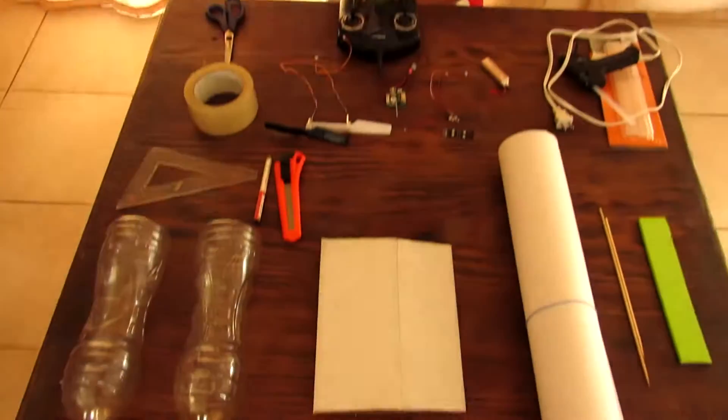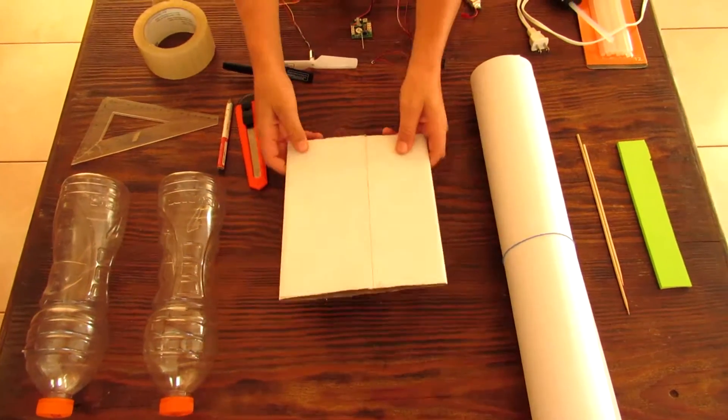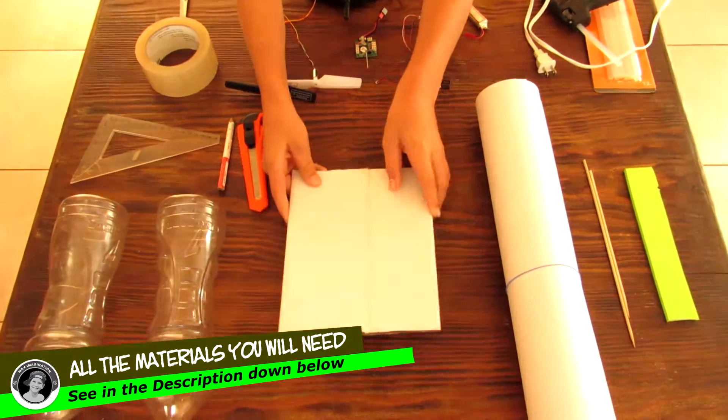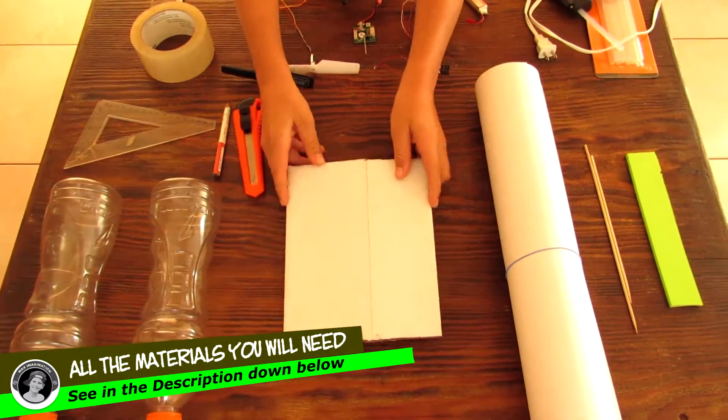To make the catamaran, a couple of Gatorade bottles, the large size, our base which is just a double up of pieces of cardboard. You can also take a wooden plank or a piece of plastic as our base.